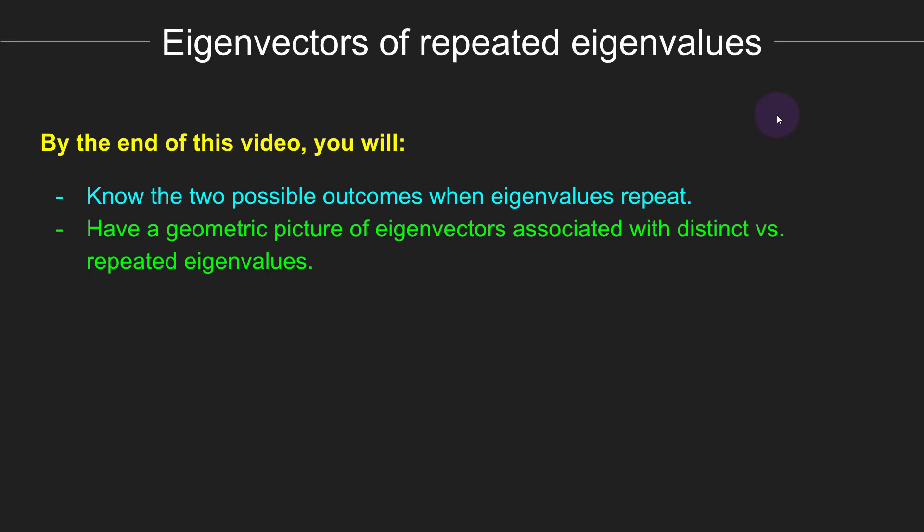Repeated eigenvalues may seem like some weird abstract quirk of mathematics, but this is actually a serious issue in practical data analysis. For example, in my own research on multivariate neural time series analysis, I encounter repeated eigenvalues sometimes and need to diagnose them and know how to deal with them appropriately. I will have more to say about these kinds of issues in my course on dimensionality reduction and source separation. I hope you enjoyed learning from this lecture, and now you know the possibilities for repeated eigenvalues.